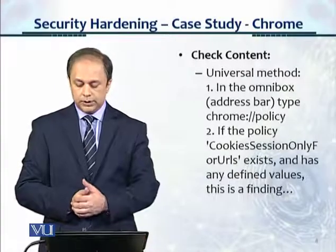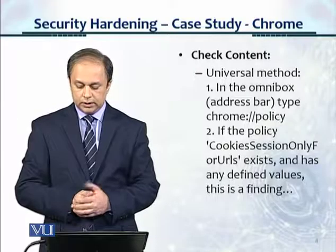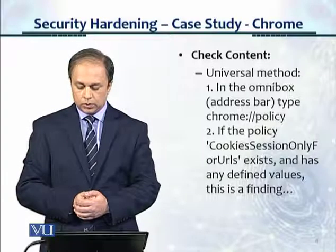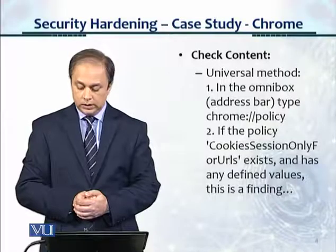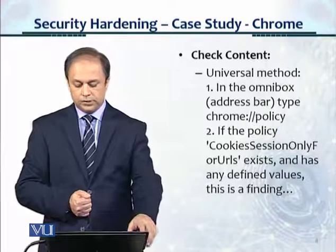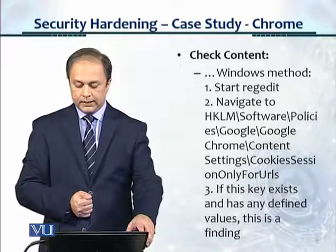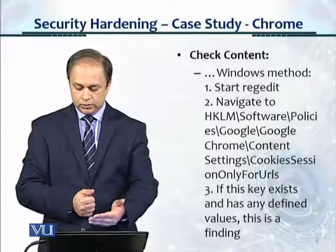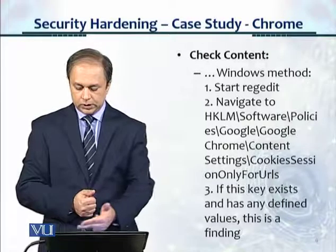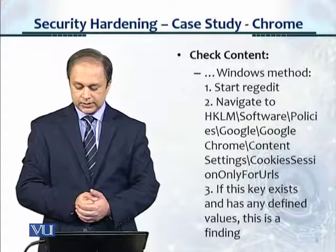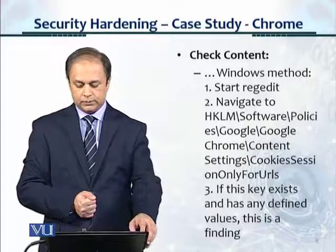Here's the check content. Universal method: in the Omnibox, go to chrome://policy. If the policy CookieSessionOnlyForUrls exists and has any defined values, this is a finding. The Windows method: start regedit and navigate to this particular registry location. If this key exists and has any defined values, this is a finding from the check content.